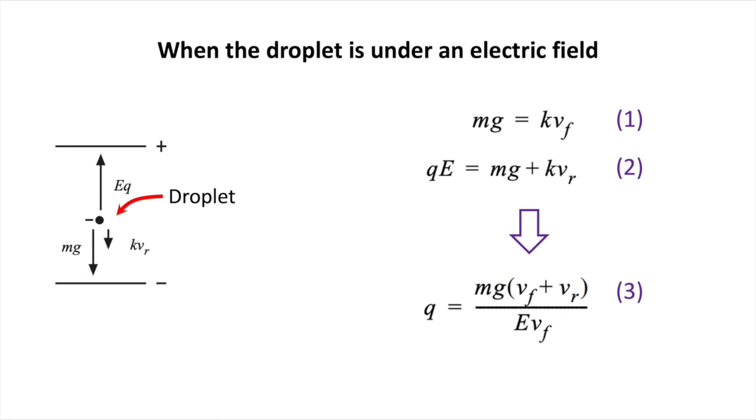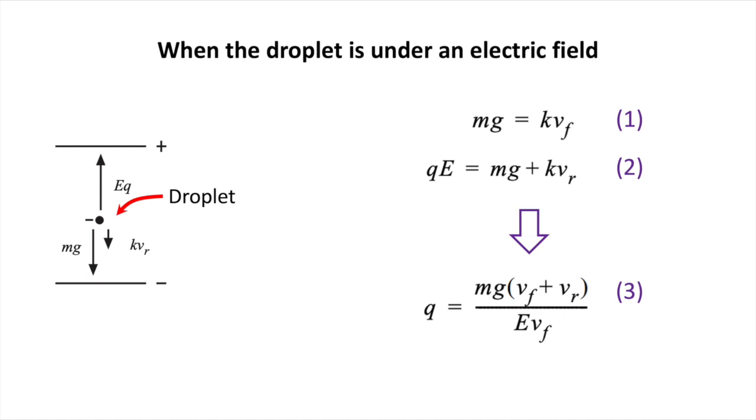From equation 1 and 2, we can solve it for q, giving us equation 3. To remove the mass from our equation 3, we can use density relation. Since density is mass over volume, the mass can be substituted by the volume of the sphere of the droplet times the density of the oil.